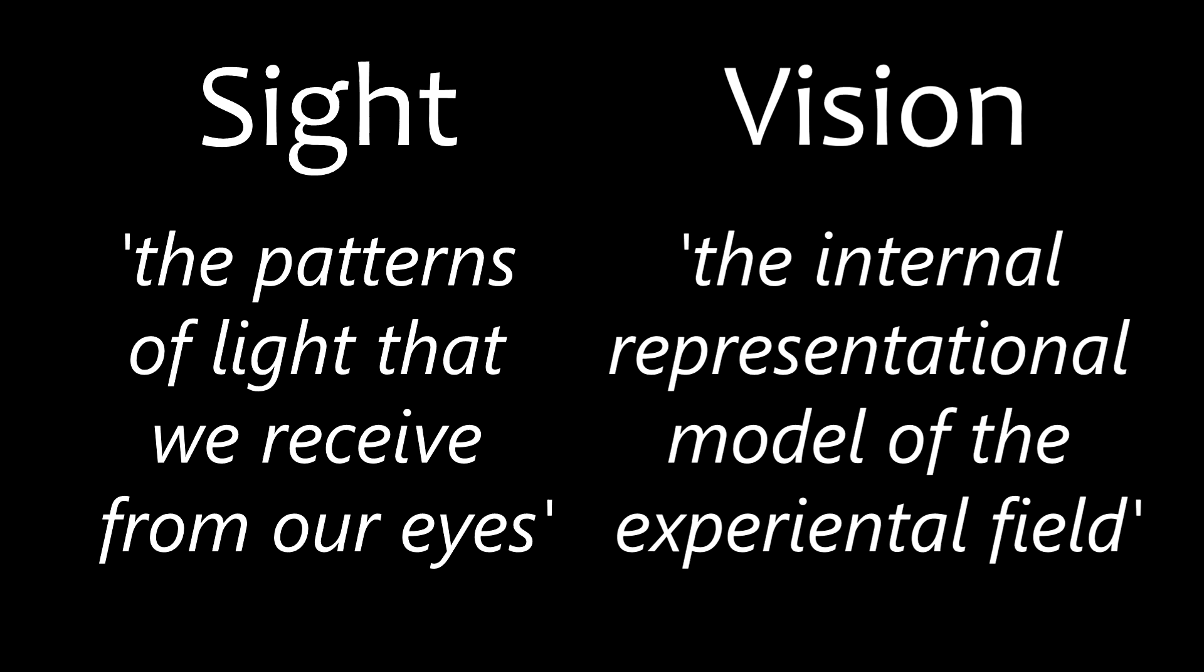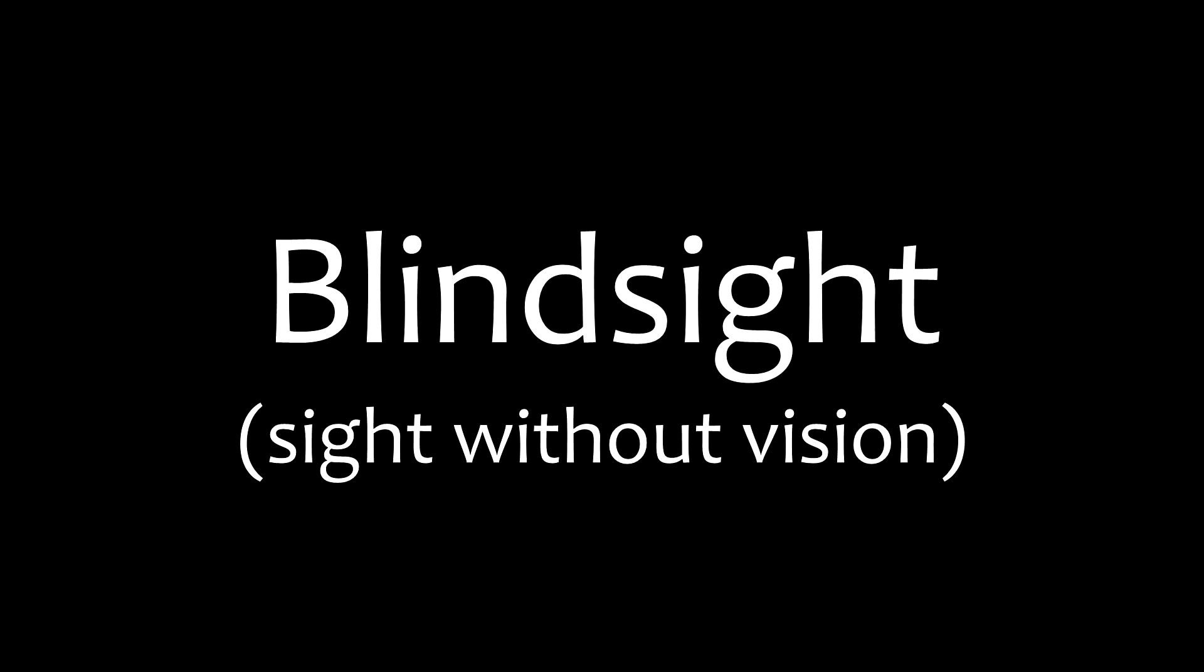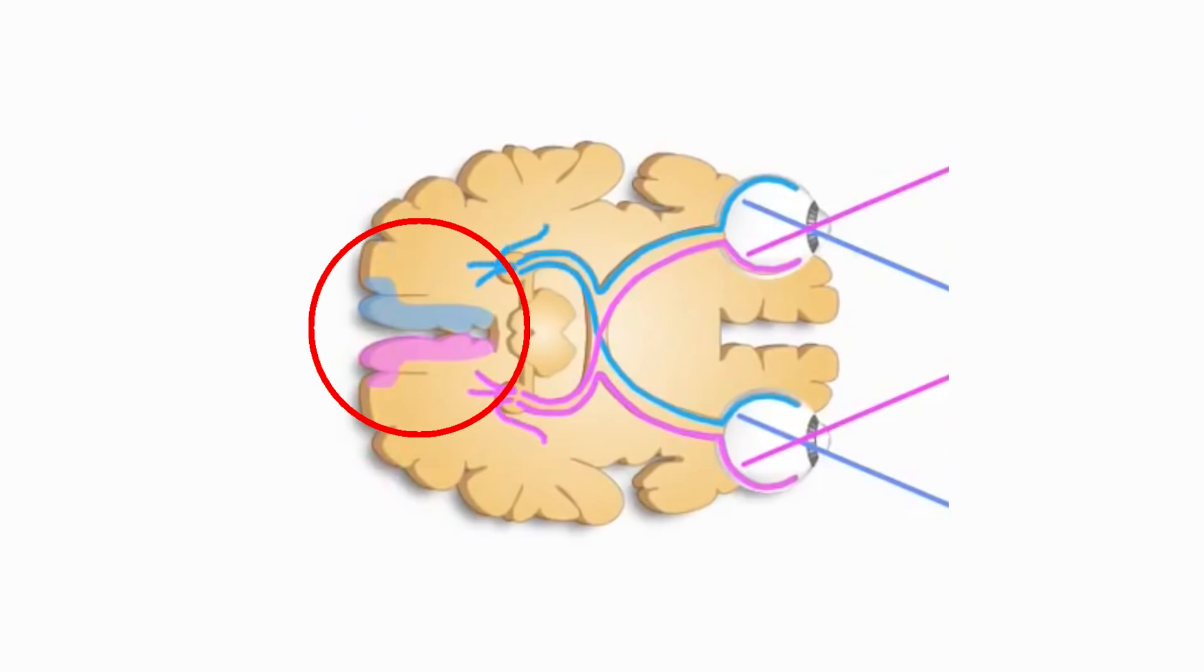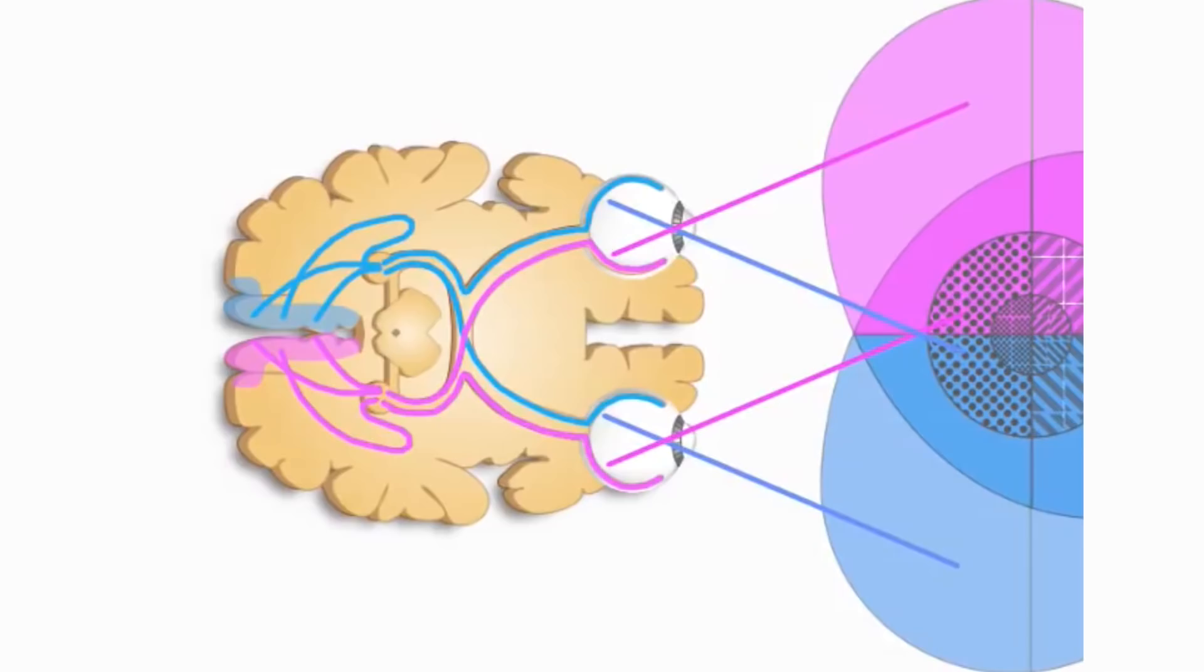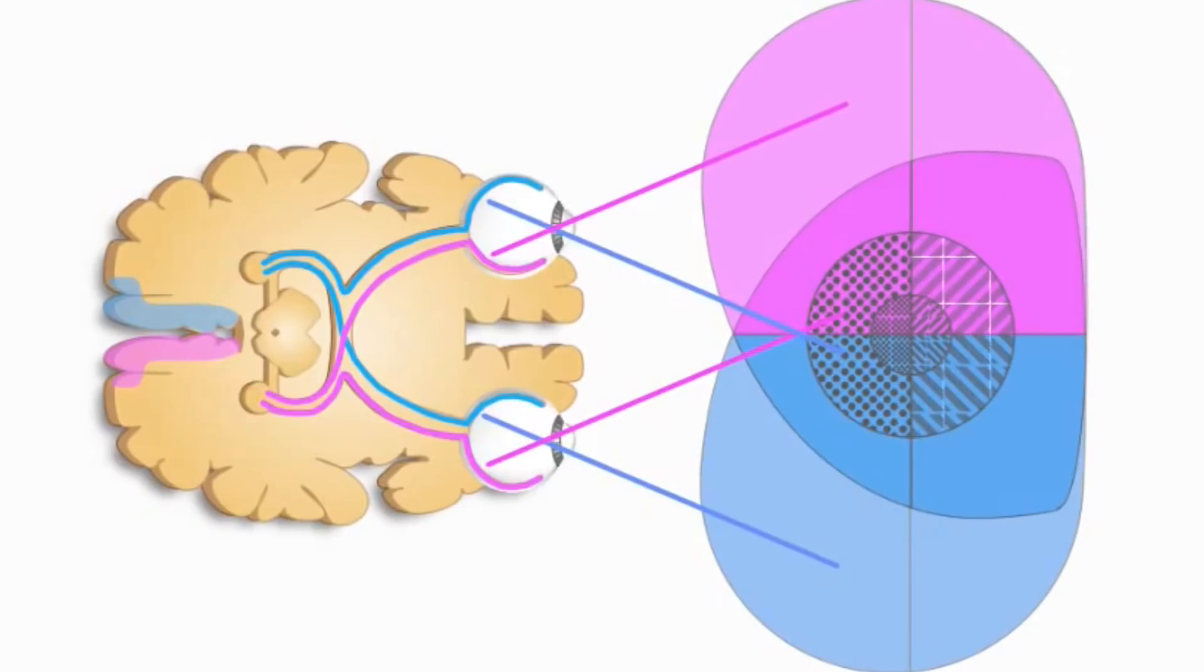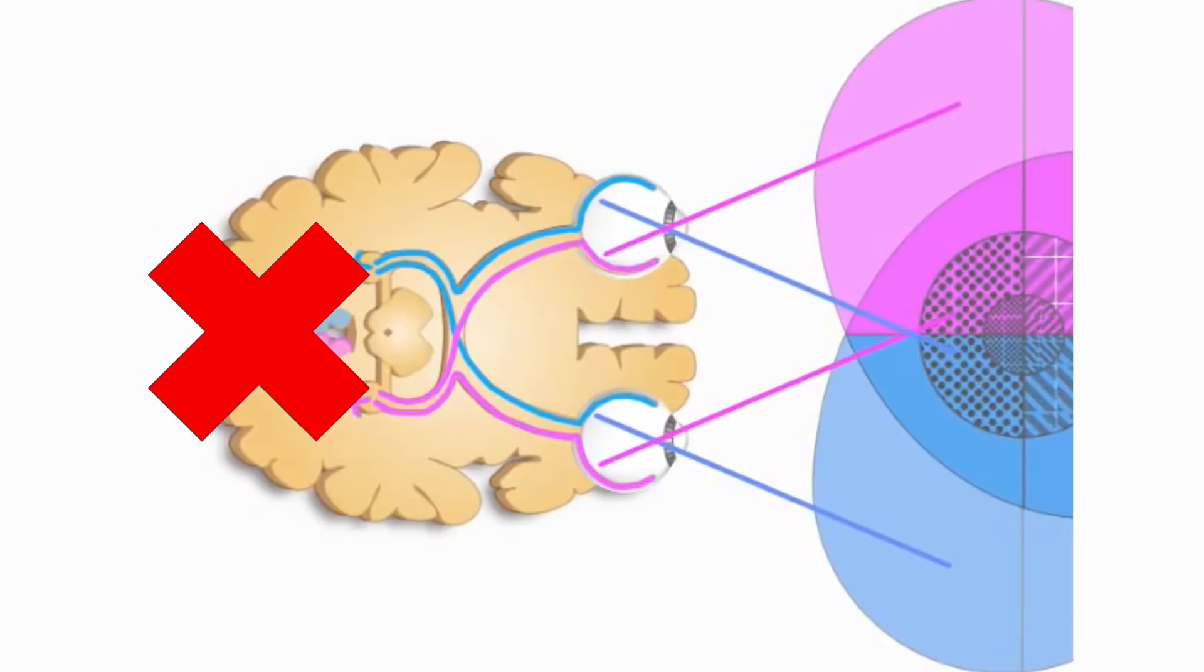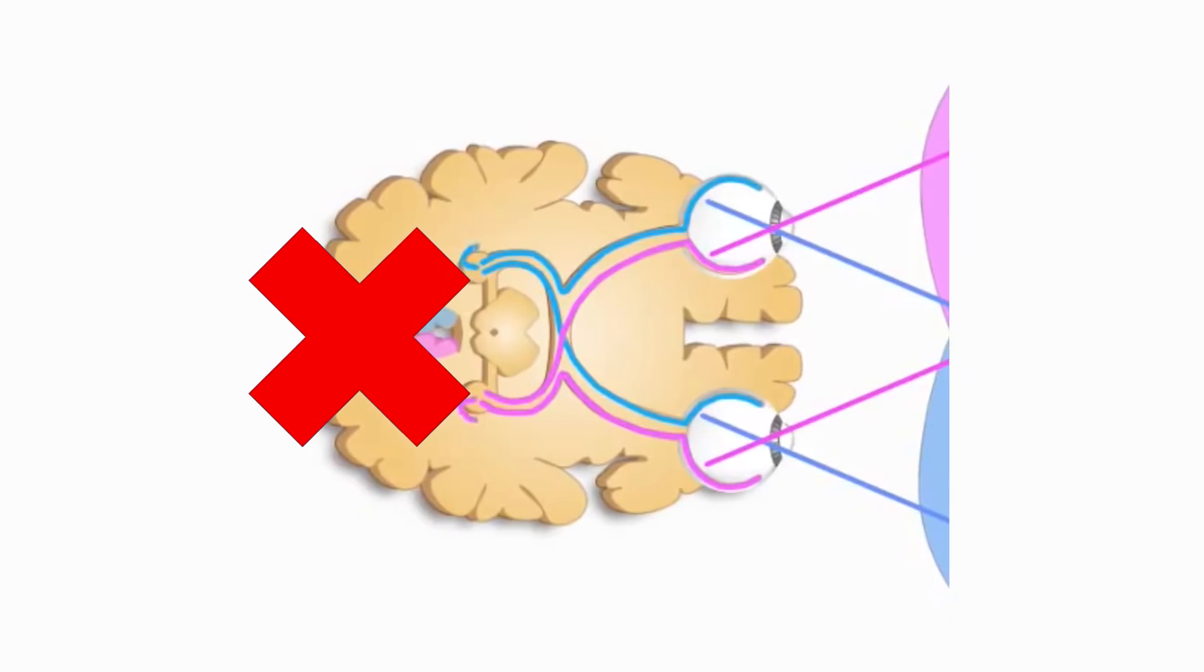But there are two very specific examples that show us how sight and vision are actually distinct from one another. The first is a neurological condition known as blindsight. Blindsight is a fascinating disorder that occurs when the visual cortex is damaged. This part of our brain receives information from our eyes and other parts of our body to construct a representation of our visual field. When it is damaged, patients lose the ability to consciously perceive their visual fields. In essence, they become blind.